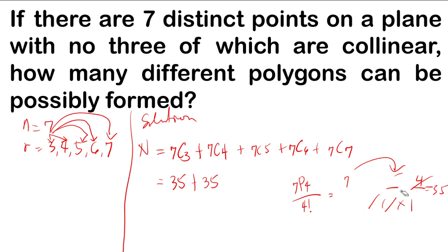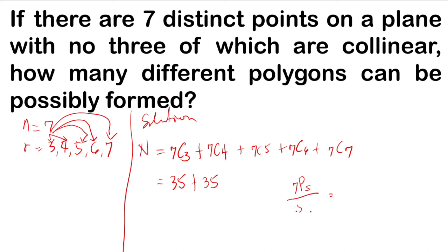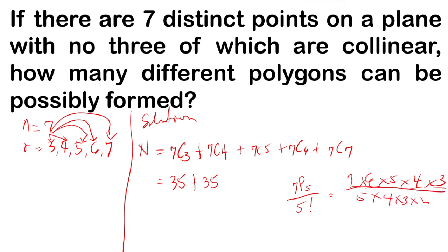For C(7,5): P(7,5) over 5 factorial is 7 times 6 times 5 times 4 times 3 over 5 times 4 times 3 times 2 times 1. Cancel 5, 4, and 3. Then 6 divided by 2 is 3, and 7 times 3 is 21. So C(7,5) is 21.